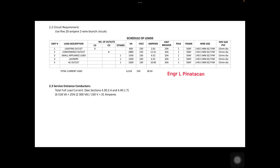Next, we compute the service entrance conductor, which is the total full load current. Per section 4.30.2.4 and 4.40.1.7 of the Philippine Electrical Code 2017, we sum all the apparent power plus 25% of the highest apparent power circuit on the schedule of load, divided by 230 volts, giving 31 amperes. The Philippine Electrical Code recommends 14 mm² TW wires as the service entrance conductor for this system.